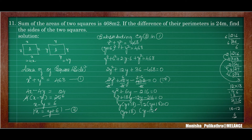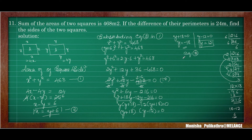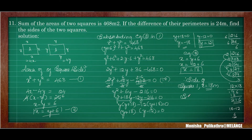Equating separately: y plus 18 equals zero gives y equals minus 18 — rejected since sides cannot be negative. From y minus 12 equals zero, y equals 12. Substituting into equation 2: x equals y plus 6 equals 12 plus 6 equals 18. Therefore side of square one is x equals 18 metres and side of square two is y equals 12 metres. This was the last question of this session. Thank you for watching.